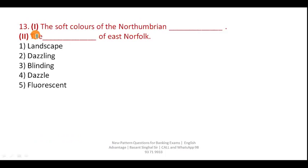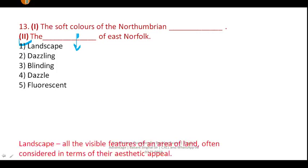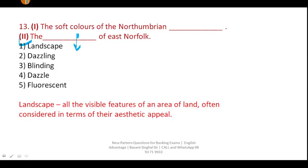Question thirteen: 'The soft colors of the Northumbrian ___ of East Norfolk.' Before 'of East' you always need a noun — for example, 'pictures of East' or 'scenery of East.' Out of all the options, landscape is the only noun. So your answer is option one — landscape. Landscape means all the visible features of an area of land.